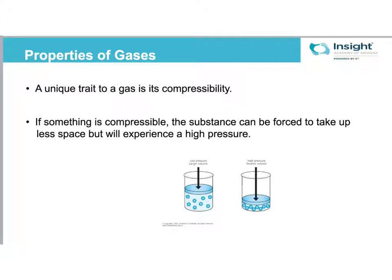A key property of gases is that gases are compressible. That means you can take a gas in a certain space with a certain volume and compress it into a smaller volume. The piston diagram at the bottom represents this idea of compressibility. When you push it into that smaller volume, your pressure is going to go up, because the molecules are going to hit the walls more often.